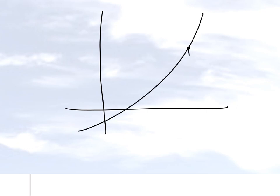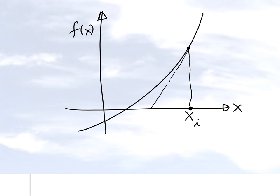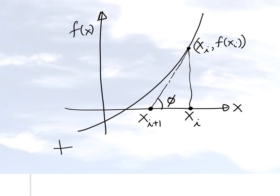The Newton-Raphson method is an iterative process. Let's say we are at the i-th iteration — suppose this is the current estimate we have reached. We draw a tangent at that particular point and see where it crosses the x-axis, calling that x_{i+1}. The point x_i has x-coordinate x_i, and the y-coordinate is the value of the function f(x_i). Let's suppose the angle of the tangent is phi.